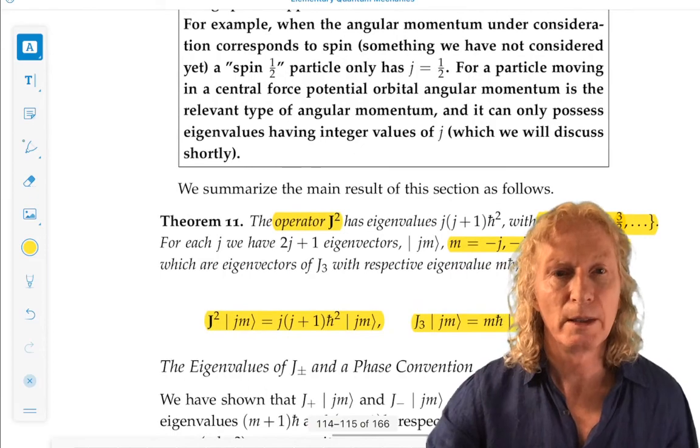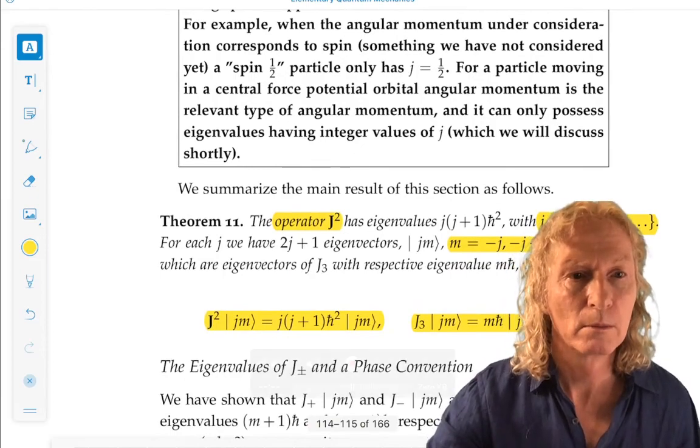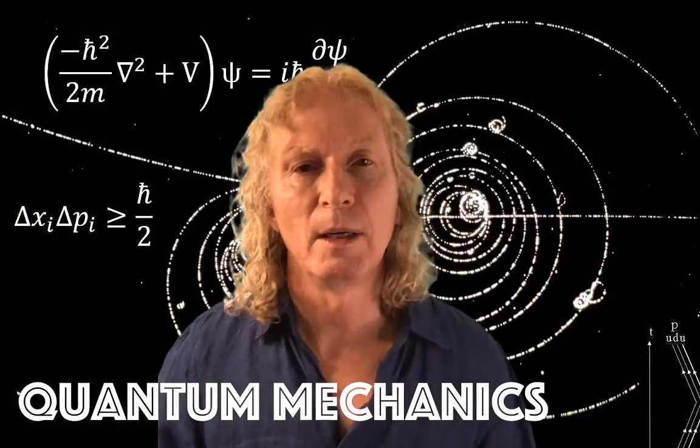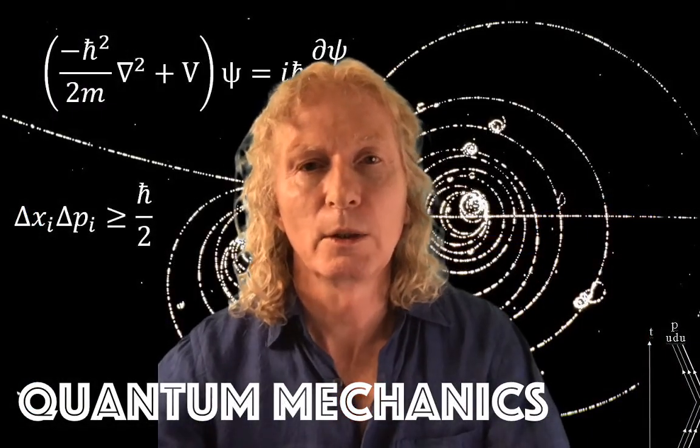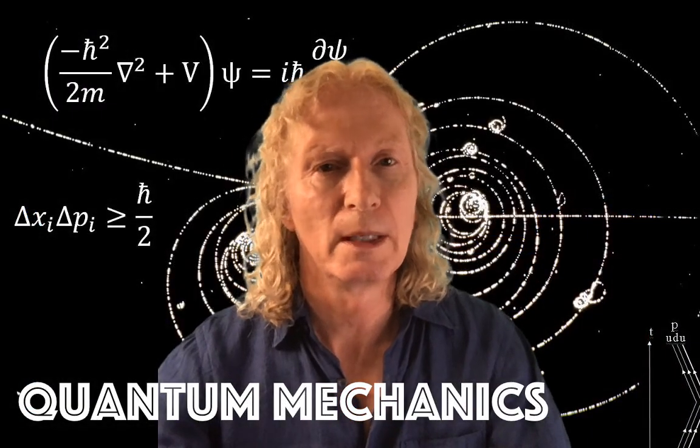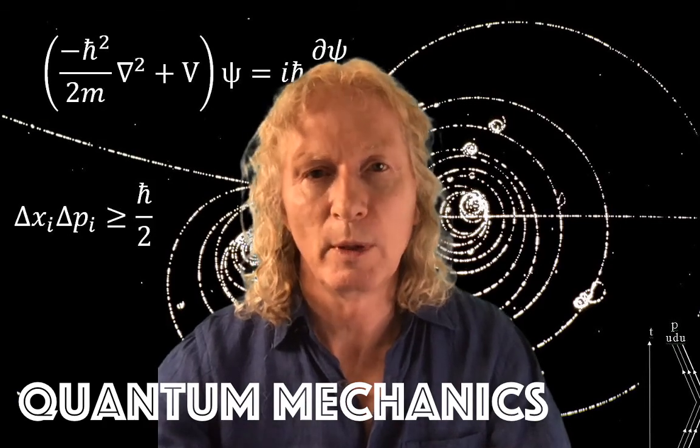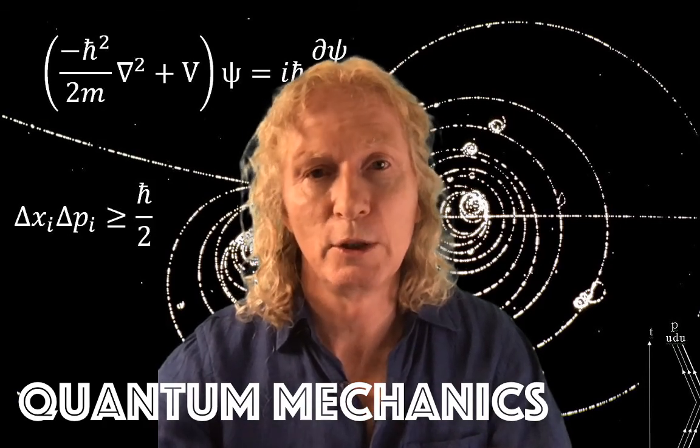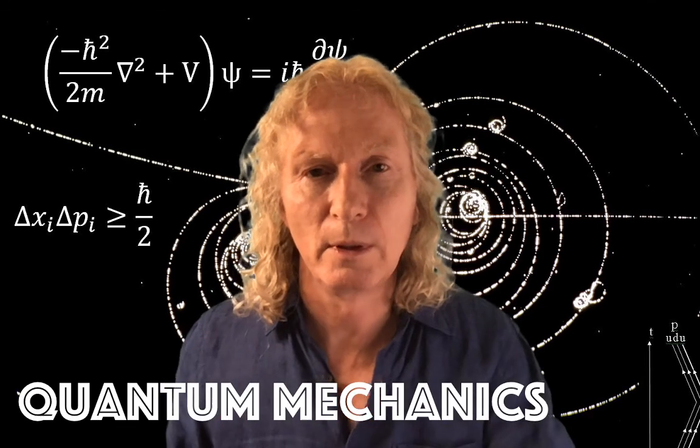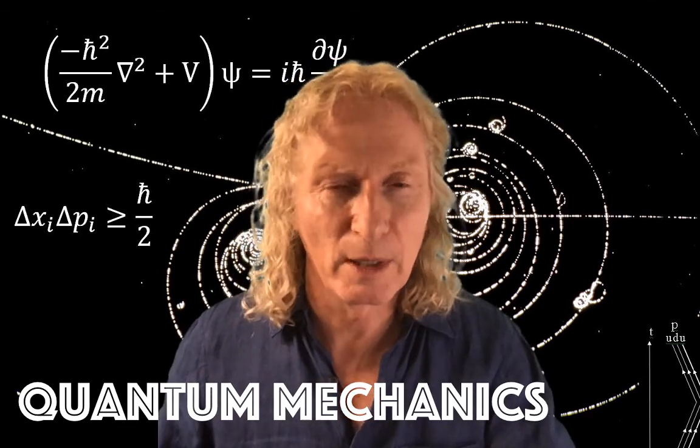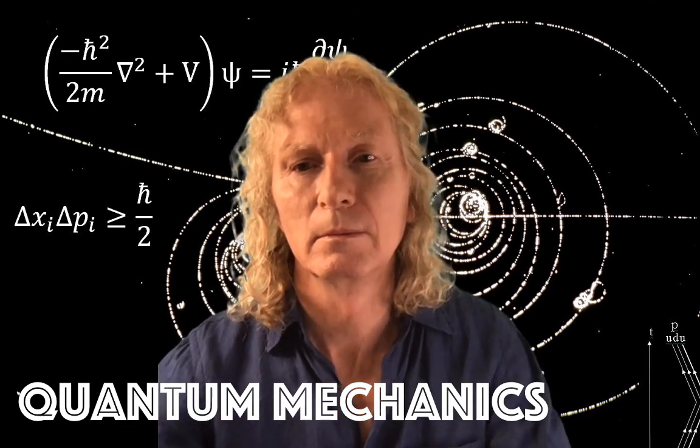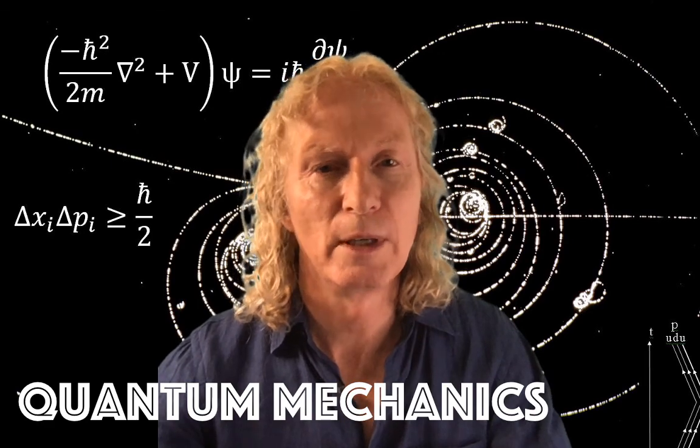That is a good place to stop right now. And we'll pick up next time with a technical difficulty. We'll do that quickly. And then we'll talk about matrix representations for J squared and J3 using this eigenvalue structure. See you next time. Bye.